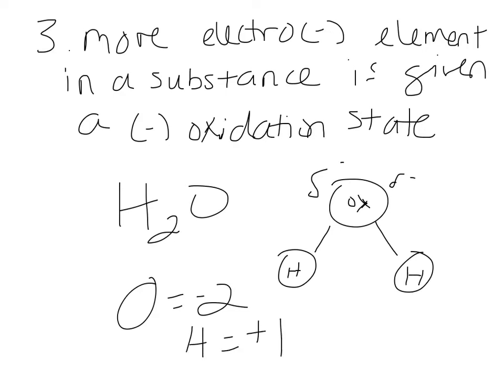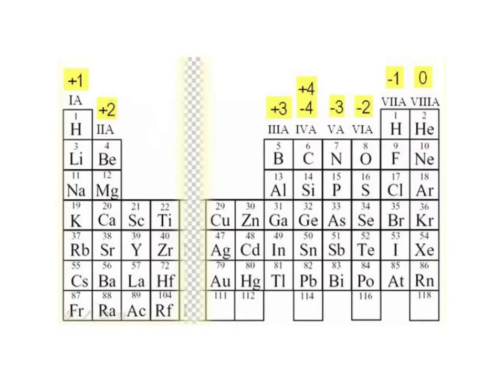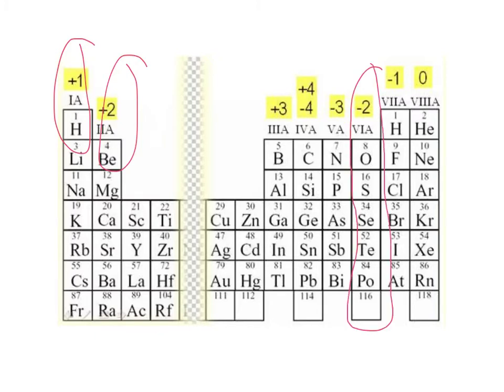Now the oxidation number of carbon in CO2: since oxygen is negative 2 and there are two oxygens (negative 4 total), carbon must be positive 4 to make a neutral compound. So carbon's oxidation number went from zero in glucose to positive 4 in CO2. This means carbon is oxidized in this reaction — it lost electrons, and its oxidation number became more positive.